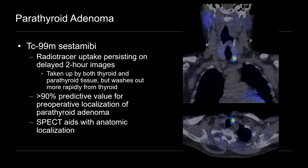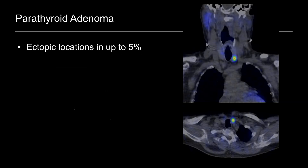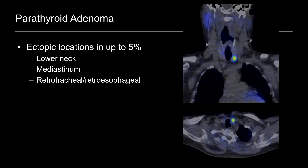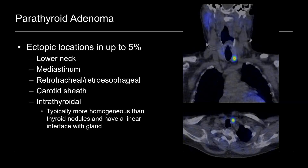An alternative modality to localize adenomas is 4D CT, which is a multi-phase CT imaging technique. Localization is important because these can be ectopic in location in about 5% of patients. Those sites can include the lower neck, the mediastinum, retrotracheal or retroesophageal regions, in the carotid sheath, and even intrathyroidal. These can be difficult to differentiate from thyroid nodules and can mimic TI-RADS category 4 nodules since they're solid and very hypoechoic, but they're often more homogeneous than thyroid nodules and will have that potential linear interface with the gland. The clinical history is also critical.